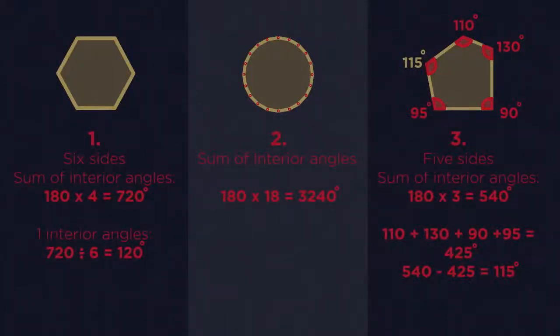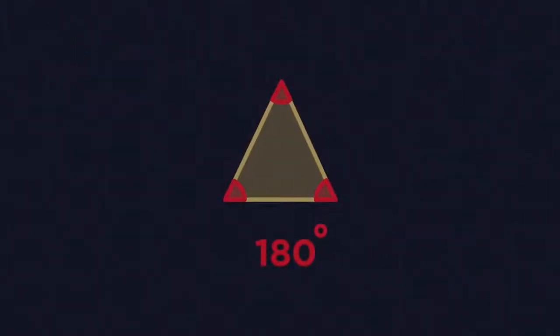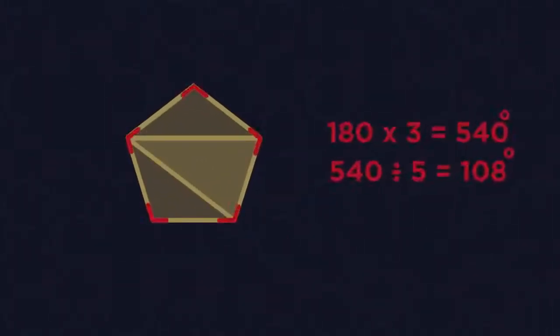So there we have the interior angles of polygons. You simply need to know that there are 180 degrees in a triangle. We then look to see how many triangles fit into the polygons. There's always two less triangles than there are numbers of sides.